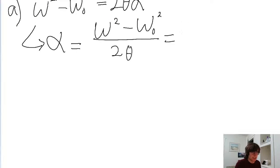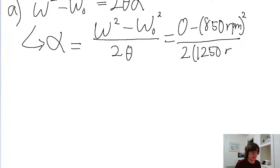So the fan is coming to a stop, so its final speed is 0. Its initial angular speed is given as 850 revolutions per minute, that's being squared, and 2 times the angular displacement, which is 1250 revolutions.